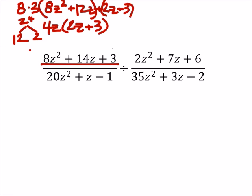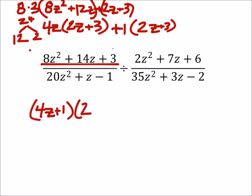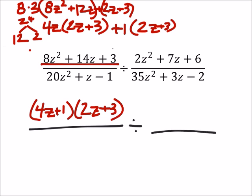Then I'm going to look at these two terms, and I can factor out a 1 from both of those, leaving me with 2z plus 3. So this top left term will factor into 4z plus 1 times 2z plus 3. And that's where we'll go in the fraction.